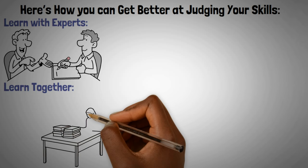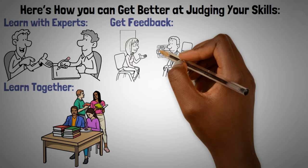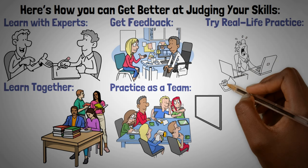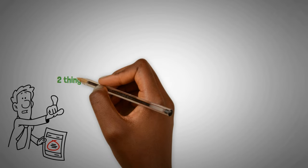Here's how you can get better at judging your skills. Learn with experts. Working with someone who's really good can help you see where you need to improve. Learn together. Learning with friends can help you catch mistakes you might not notice on your own. Get feedback. Hearing from others about how you're doing can help you get better. Practice as a team. Working with others lets you learn from their strengths and see where you might be falling short. Try real-life practice. Practicing in situations like what you'll face in real life is the best way to see what you really know.